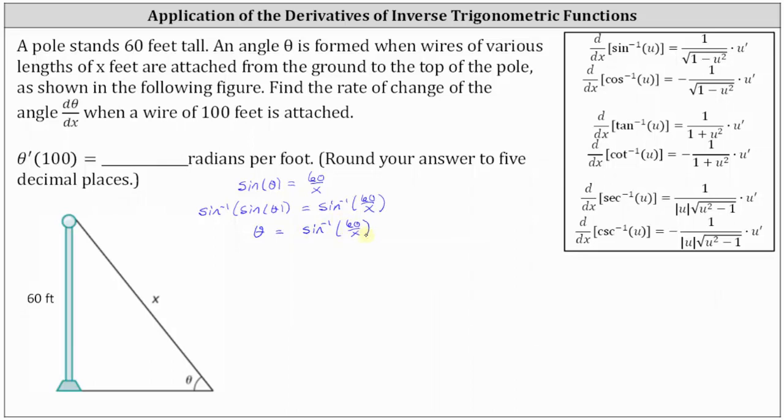So now that we have theta as a function of x, we can determine dθ/dx. But notice how when differentiating arcsin(60/x) with respect to x, we will have to apply the chain rule, where the inner function u is 60 divided by x. So if we have u = 60/x, which we can write as 60x^(-1), we know we need to determine u'.